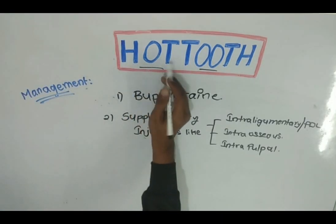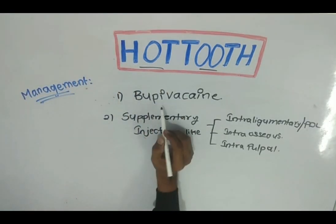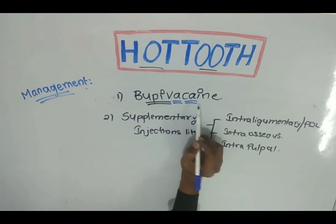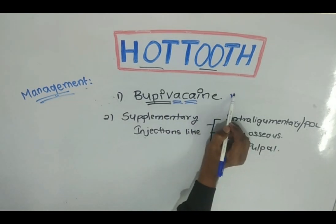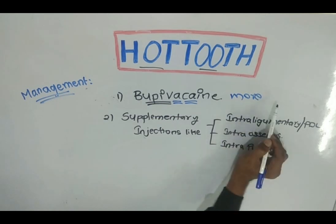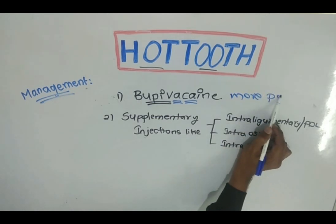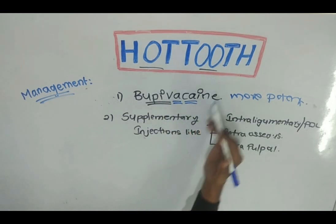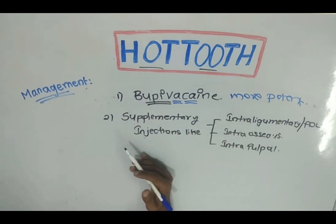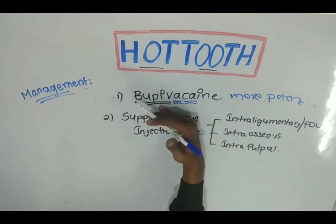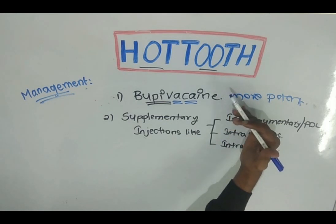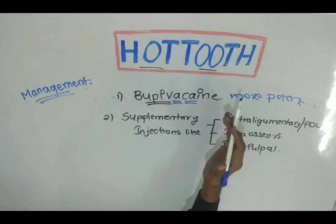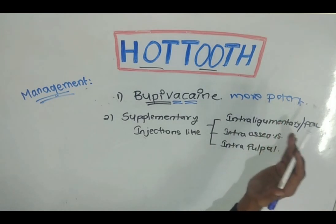Coming to the management of hot tooth, according to Grossman, bupivacaine is found to be more potent than lignocaine. Especially in the case of hot tooth, bupivacaine is more potent when compared to lignocaine for achieving anesthesia.